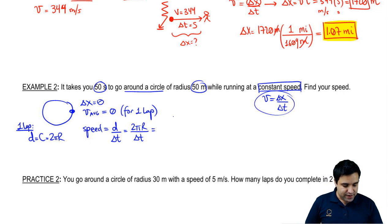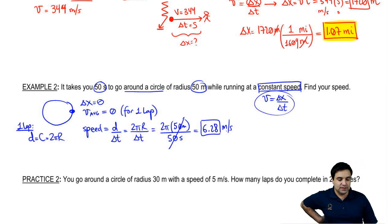I have the radius. It's 50 meters. And I have this time. It's 50 seconds. The 50s cancel. And I'm left with 2 pi. So this is 6.28 meters per second. That's how this stuff works.